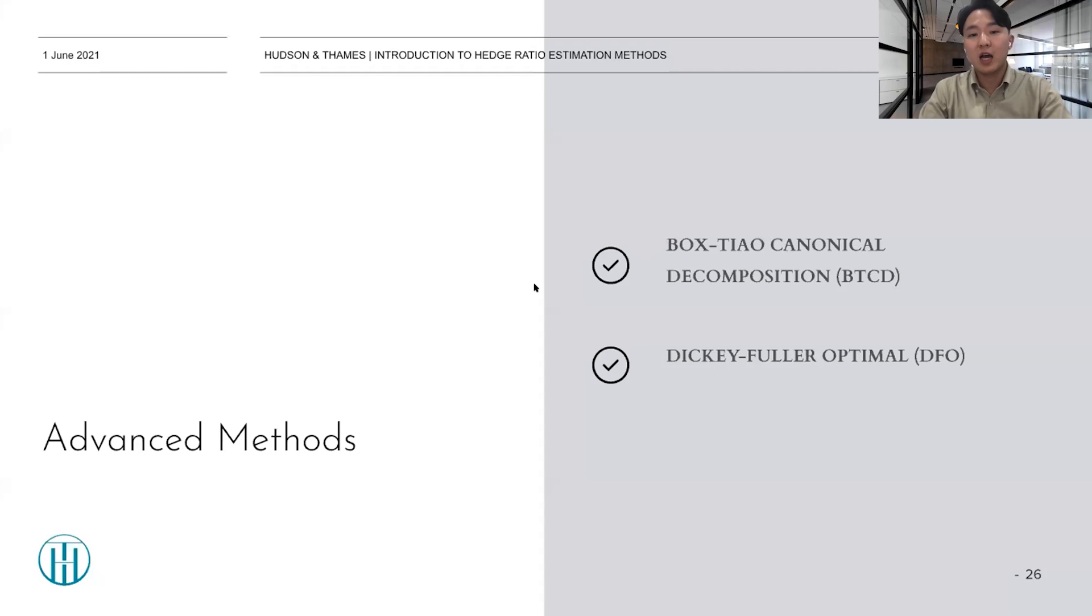So there are two methods I want to share for the advanced method. The first one is Box Tiao canonical decomposition, which is BTCD. And the other one is Dickey-Fuller optimal, which is DFO.